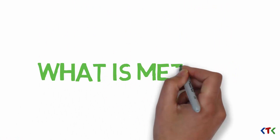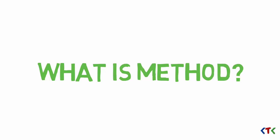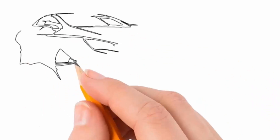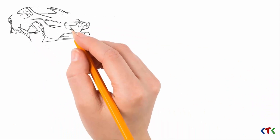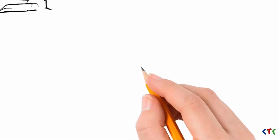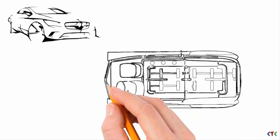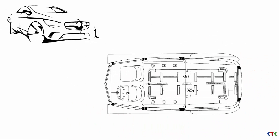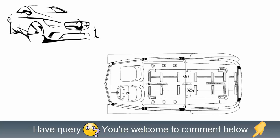Suppose there is an engineer who wants to assemble a car — a mechanical engineer who wants to build a car. He is not directly going to start assembling the car. First, he will have a blueprint; he will design a plan.